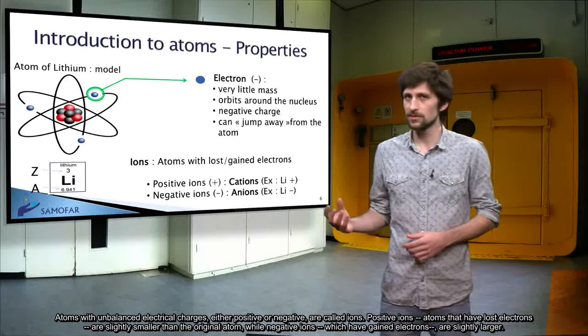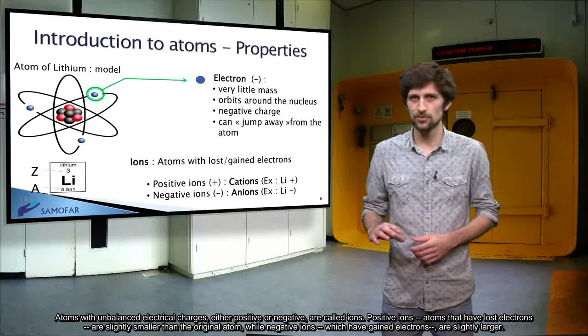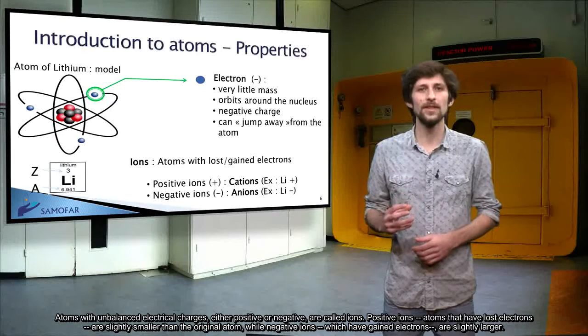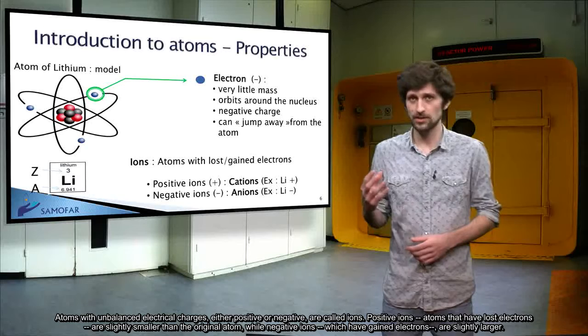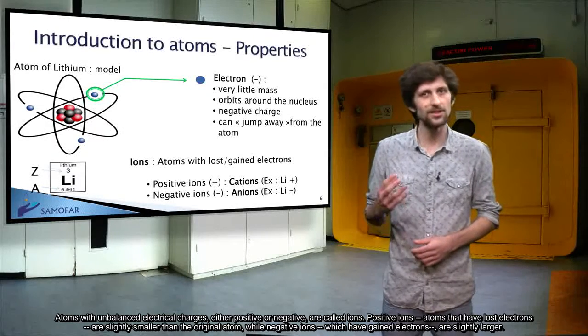Positive ions, atoms that have lost electrons, are slightly smaller than the original atom, while negative ions, which have gained electrons, are slightly larger.